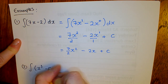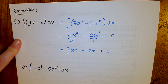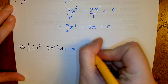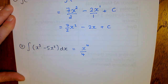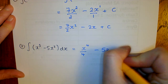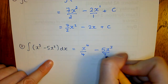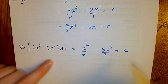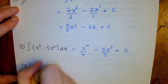Our second example: integrating x cubed minus 5x squared with respect to x. We add 1 to the index of x cubed to get 4, then divide by 4. We add 1 to the index of 5x squared to get 3, then divide by 3. We get x to the power 4 over 4 minus 5x cubed over 3, plus c, because there could have been a constant there.